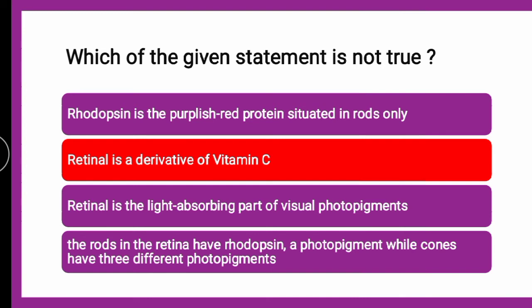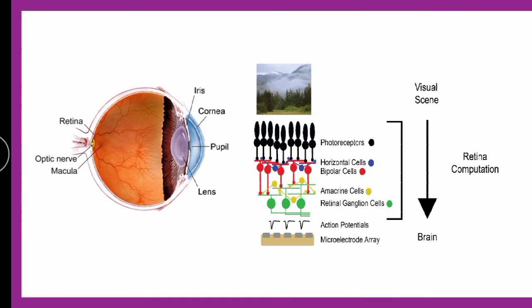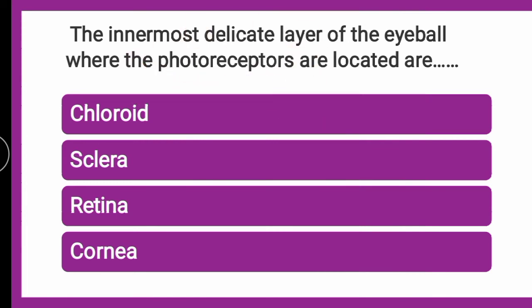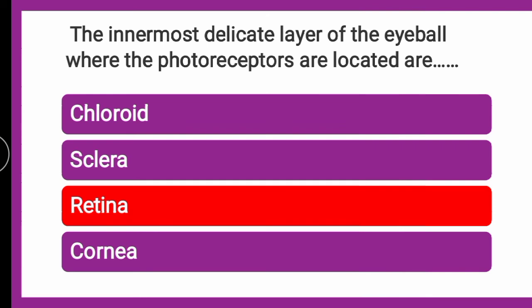Next question: the innermost delicate layer of the eyeball where the photoreceptors are located — whether it is choroid, clera, retina, or cornea? Here you can see the location of the photoreceptors. These photoreceptors are present in the retina, which is the innermost delicate layer of the eyeball.